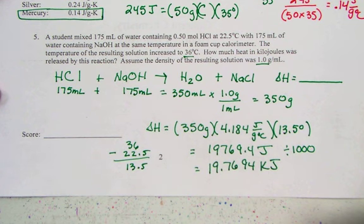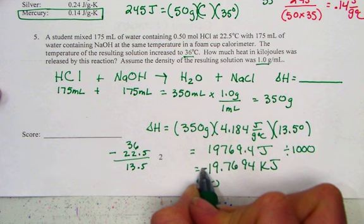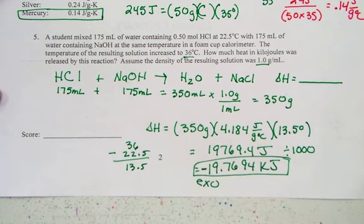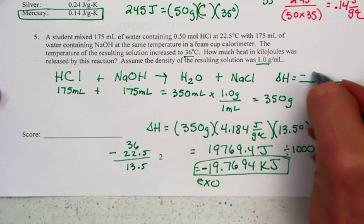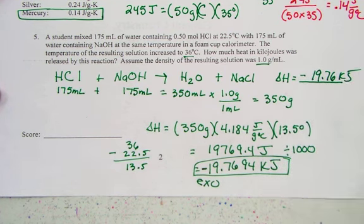This was a heat-releasing process. The thermometer gained the energy. It is out in the system. This is an exothermic process. I'll report my answer as negative for the exothermic value. The delta H, negative 19.76 kJs of heat.